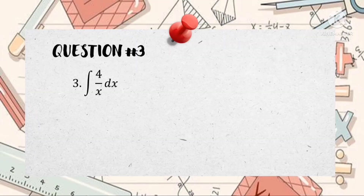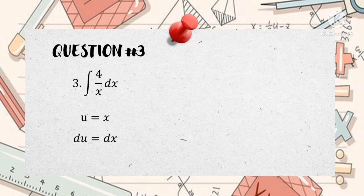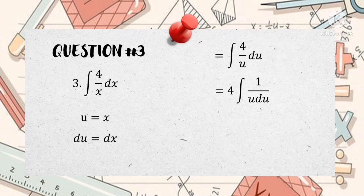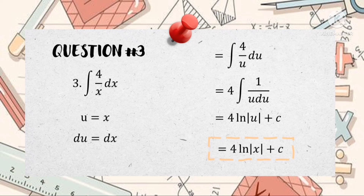Lastly, for number three, we have the integral of 4 over x dx. The u will be the denominator, which is x, and since the derivative of x is 1, we can just write dx for du. The integral of 4 over x dx equals the integral of 4 over u du. Since 4 is constant, it becomes 4 times the integral of 1 over u du. Using the theorem that the integral of 1 over x dx equals ln of the absolute value of x plus C, it becomes 4 ln of the absolute value of u plus C. Substituting back, the final answer is 4 ln of the absolute value of x plus C.